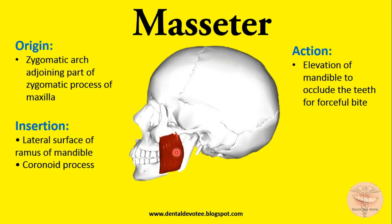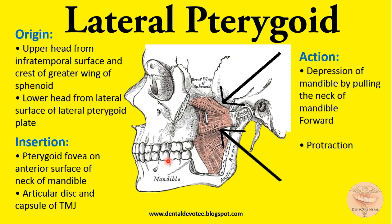Its action — you already know the trick. When it shortens, the mandible will elevate to occlude the teeth for a forceful bite. It is a very powerful muscle. So elevation of the mandible will take place.